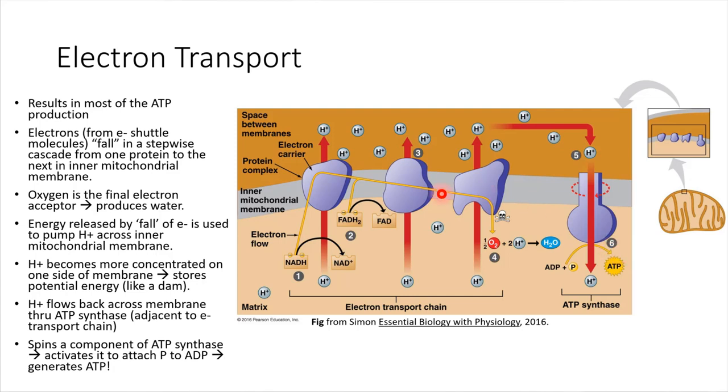One other thing to notice here is just where does the electron finally end up at in the end? So we said that the electron gets handed off down these proteins. In the end, the last protein in the chain passes the electron to a molecule of oxygen. And this is why oxygen is one of the inputs for cellular respiration. This is where it's needed.